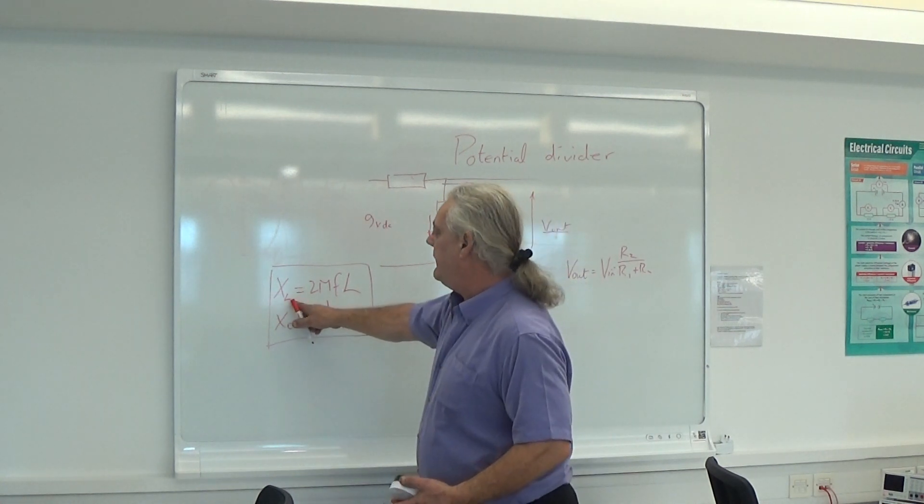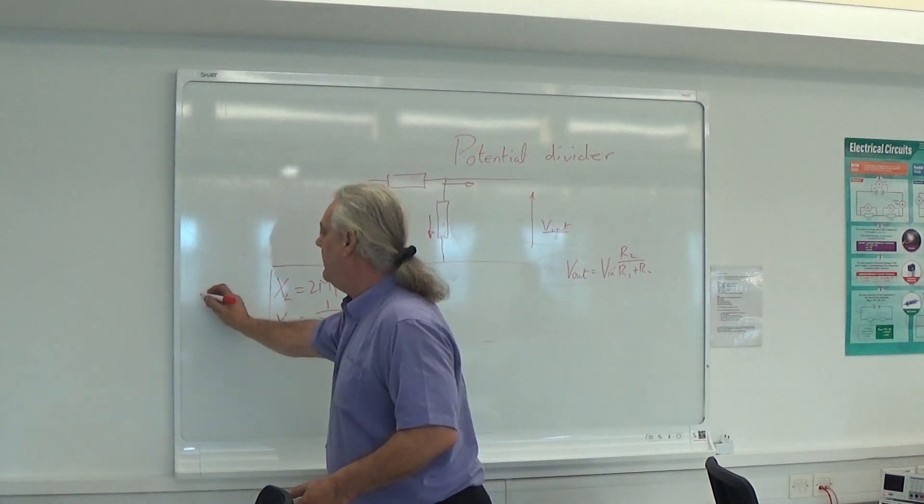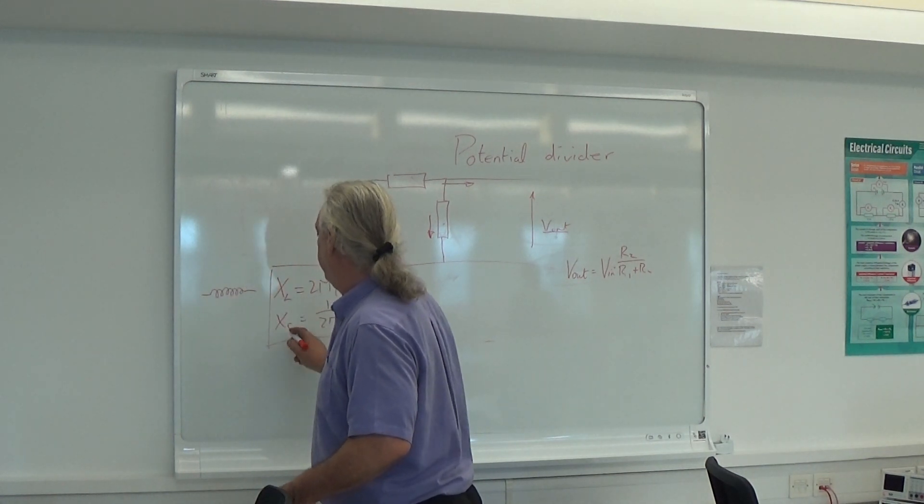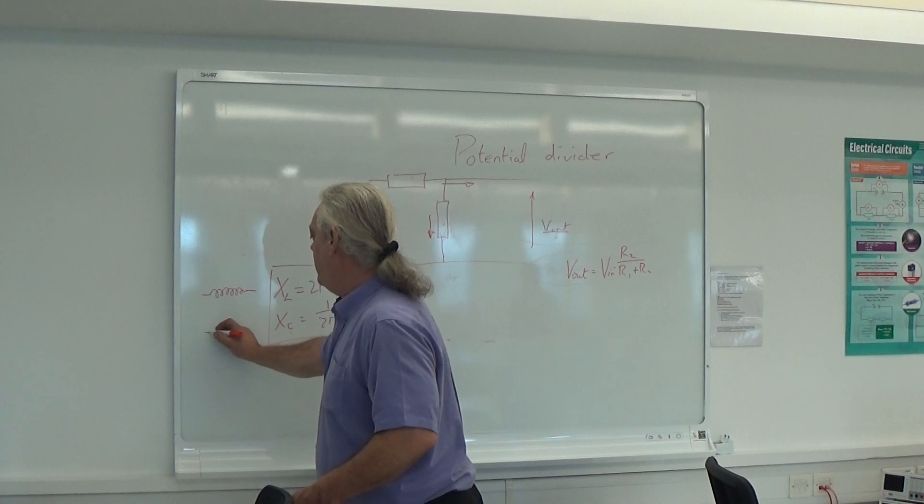Well, in this particular case, XL, well that's an inductor, which is just a coil of wire. And in this particular case, XC, that's a capacitor.